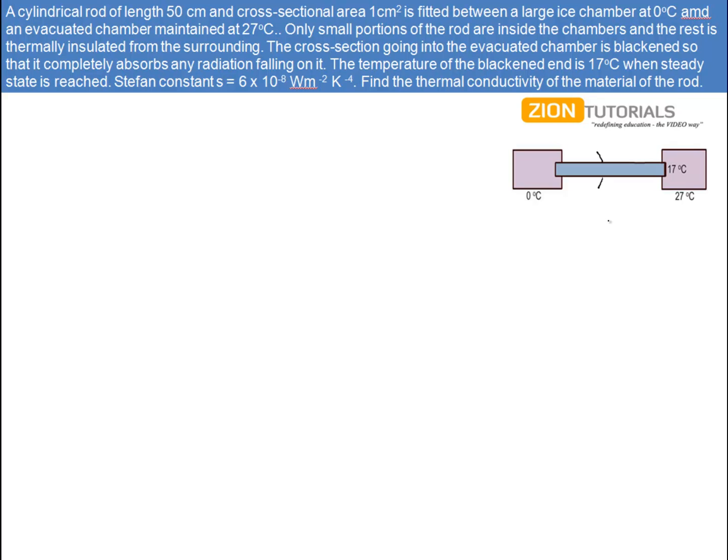The cross-section going into the evacuated chamber is blackened. This part is totally blackened so that it completely absorbs any radiation falling on it. The temperature of the blackened end is 17 degrees when steady state is reached.